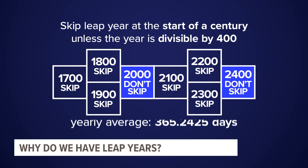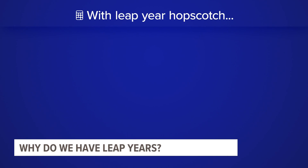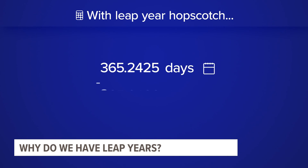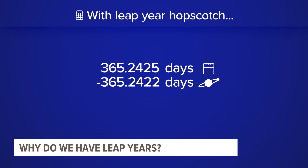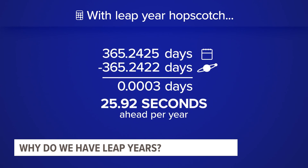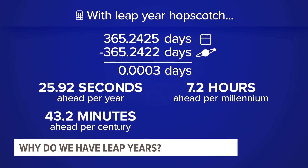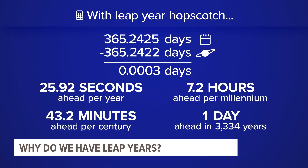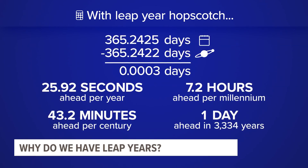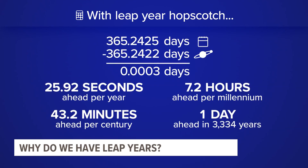With this added solution, the current average is 365.2425, which is a lot closer to the solar year. But unfortunately, we're still off by decimals — about 26 seconds ahead each year. At this rate, it would take over 3,000 years to be off by one day, which some would say is close enough.